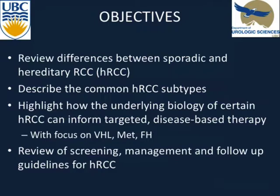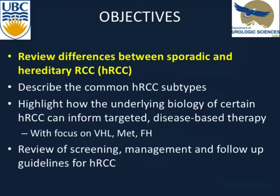The objectives today are to briefly review the differences between sporadic and hereditary RCC as distinct phenotypes with potential common underlying genetics. We'll describe the common subtypes — with specific focus on those driven by VHL, MET, and fumarate hydratase. In combination with describing these subtypes, I'd like to go into the underlying genetics and show how understanding the familial genetics of RCC can inform disease-based treatment for sporadic diseases resulting from the same mutations. Finally, we'll end with a clinical talk on screening, management, and follow-up guidelines for hereditary RCC, including new papers from the Canadian Kidney Cancer Group.